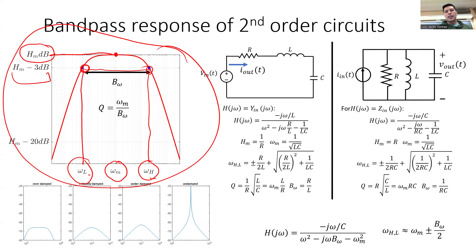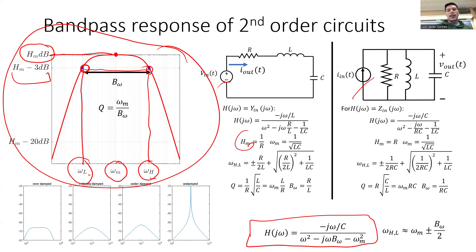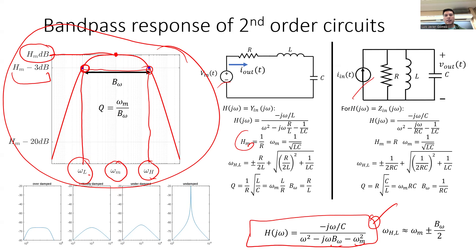For the band pass plot, it's critical to know that H_m is the maximum response, omega_m is the corresponding frequency, omega_high is the frequency where the response falls by 3 dB (i.e., by 1/√2) on the right side, and omega_low is that same drop on the left side. The bandwidth is the difference between omega_high and omega_low. You should also know how to derive H_m from the circuit.